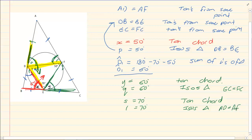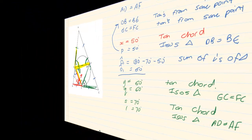The tan-chord theorem is a favourite but you must be able to read it: here is my tangent, here is my chord, it makes an angle, and then I go opposite. Once you get this theorem it is very easy to work with many riders. Thank you for watching.